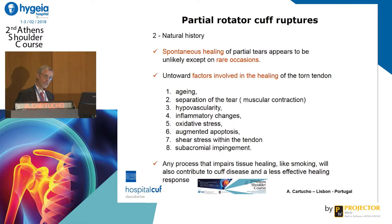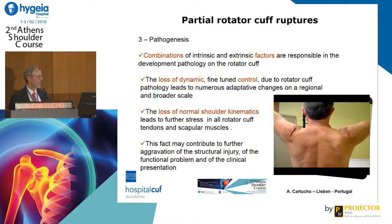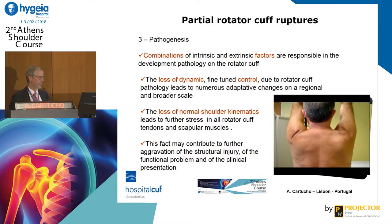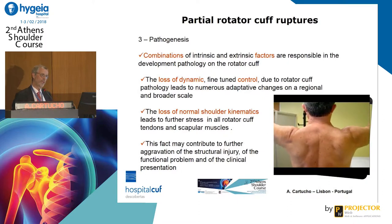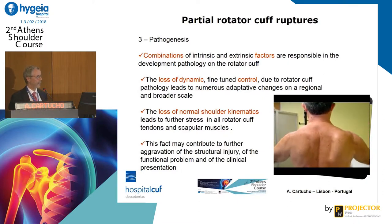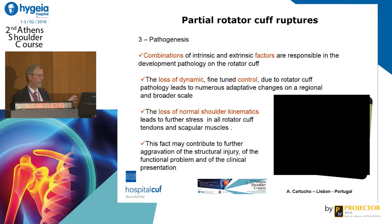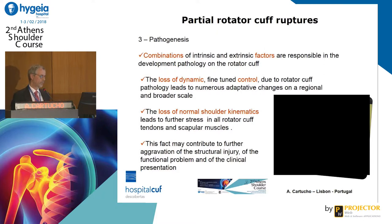One of the things we know is definitely interfering with tendon healing is, of course, smoking. Regarding pathogenesis, you can see in the video a patient with scapulodyskinesia. We have had two talks about dyskinesia and the adaptive movements of the shoulder. It always begins either with a traumatic event or a non-traumatic event, with intrinsic factors conjoined with extrinsic factors leading to abnormal kinetic movement of the shoulder and subsequently of the shoulder girdle.